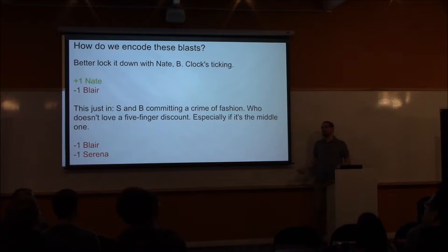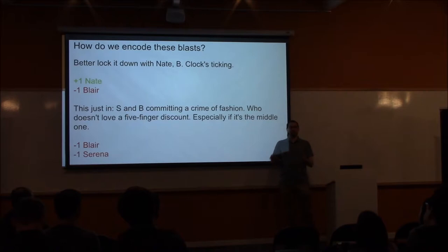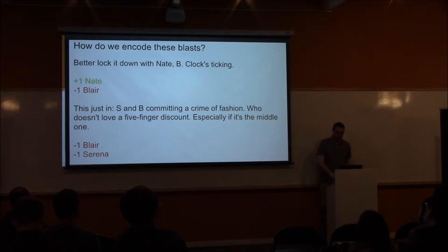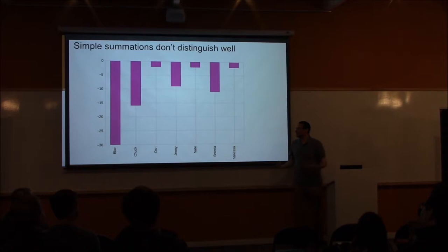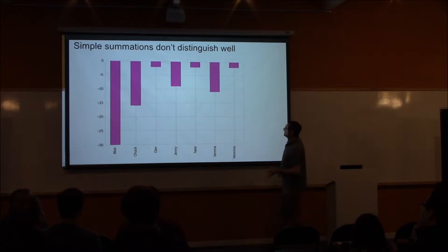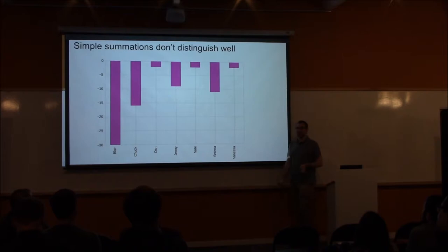A simple thing you can do is: if you have this big matrix where the columns correspond to the characters and the rows correspond to the various blasts, encoded with plus one, minus one, and zero, you can just take the sum. The person with the highest sum is probably going to be Gossip Girl. Unfortunately the graph shows some interesting things. For example, Blair is very unlikely to be Gossip Girl, or perhaps very likely because she's trying to maintain secrecy. What we get is that Dan, Nate, and Vanessa are all tied for first place when it comes to the total — and having about 50% of the characters sharing the same score is not good.